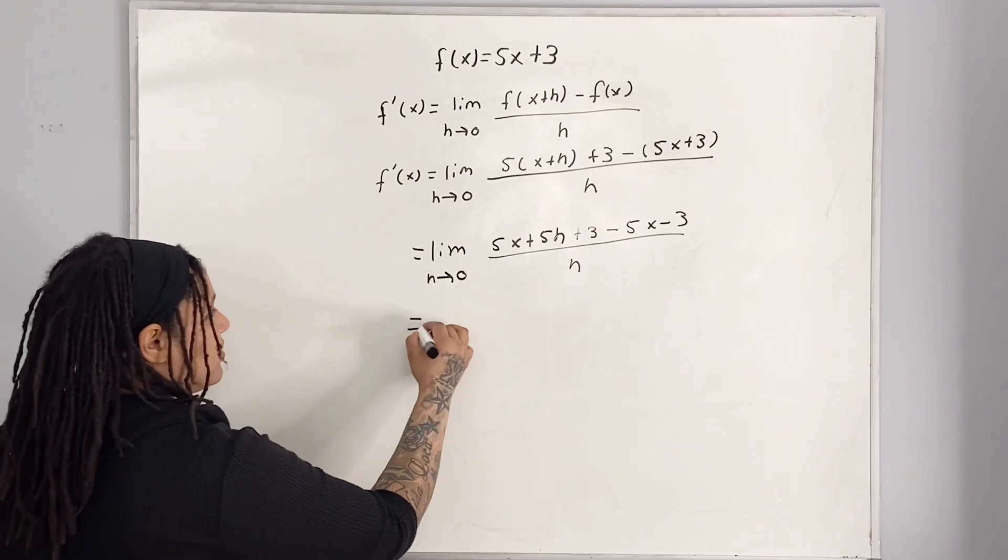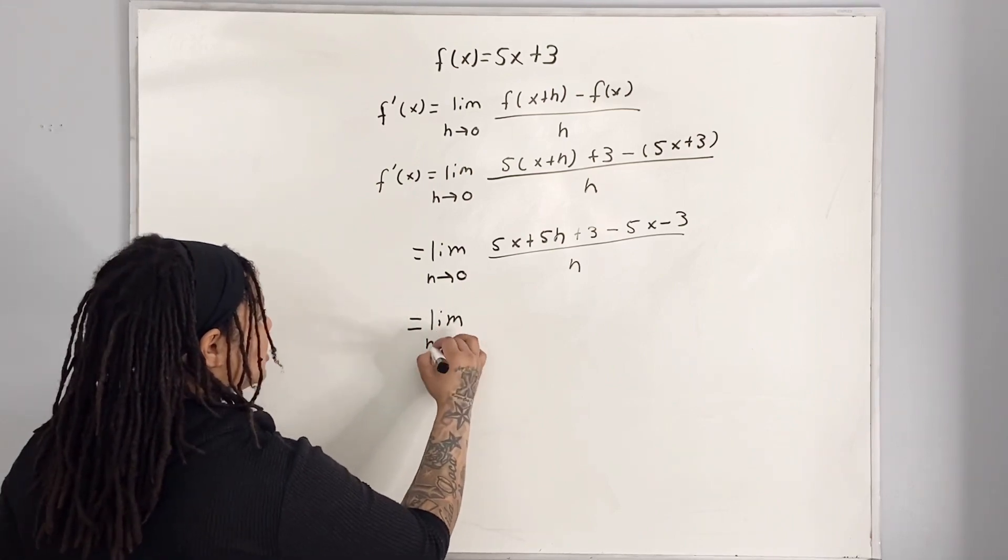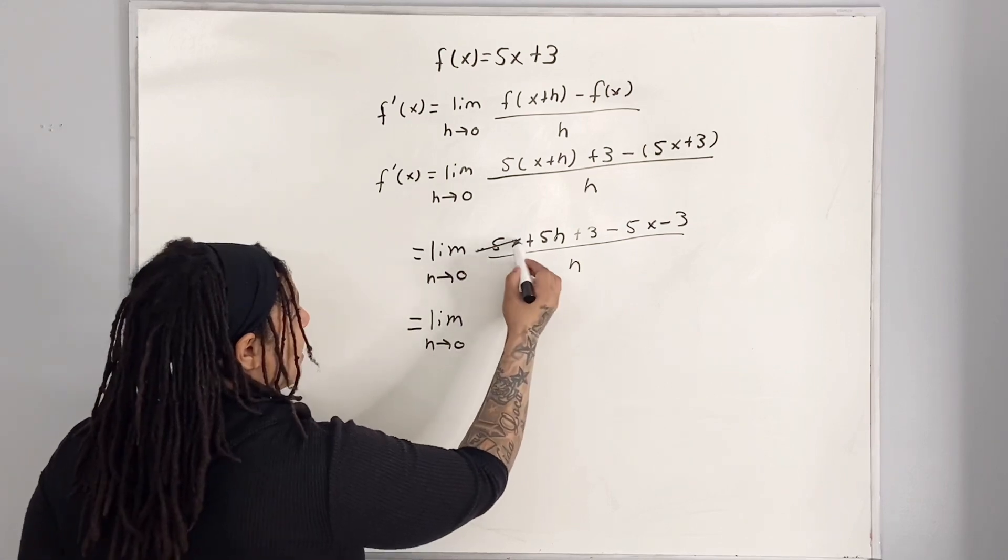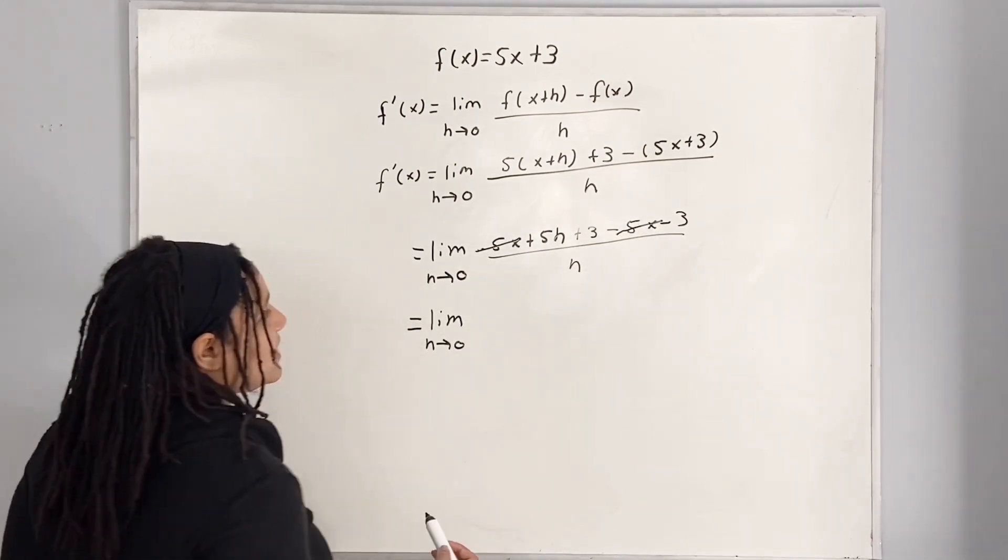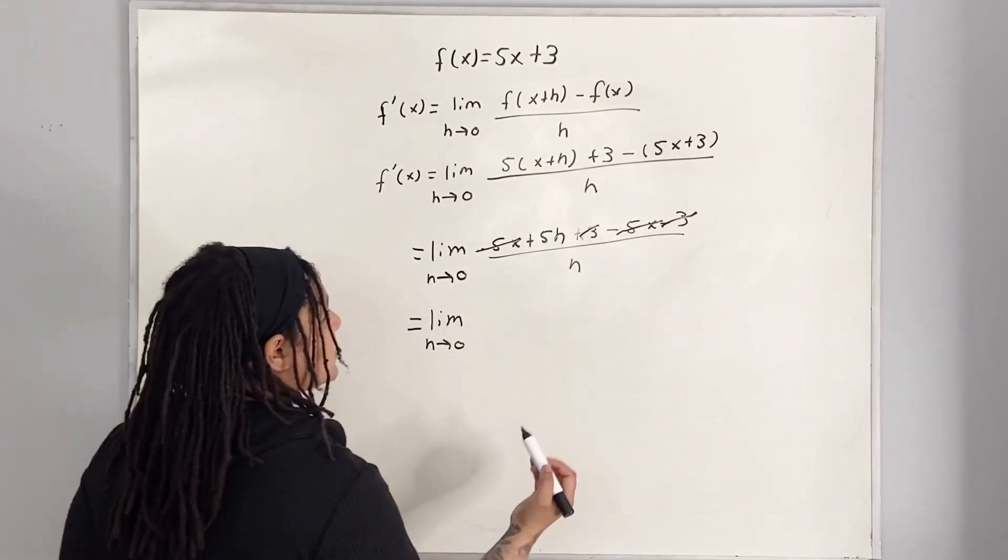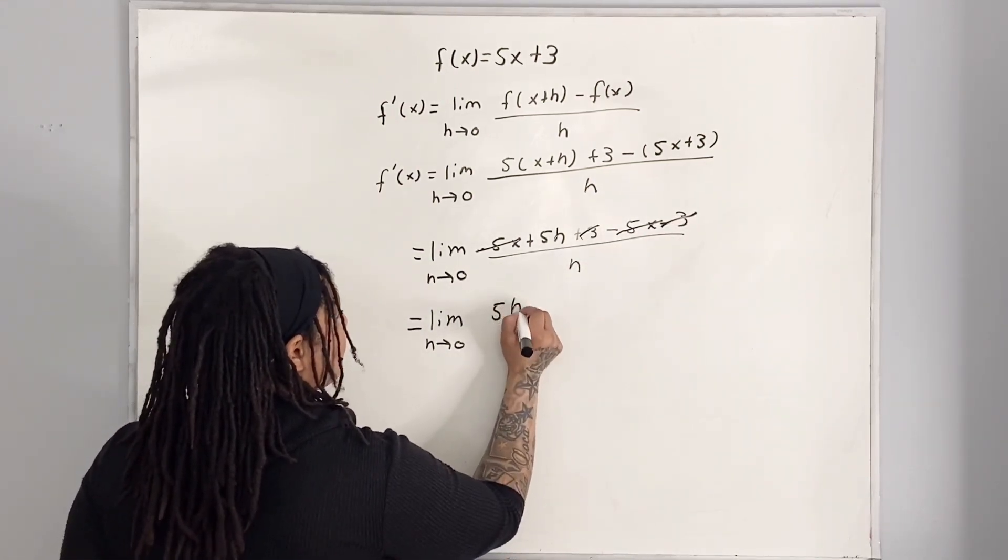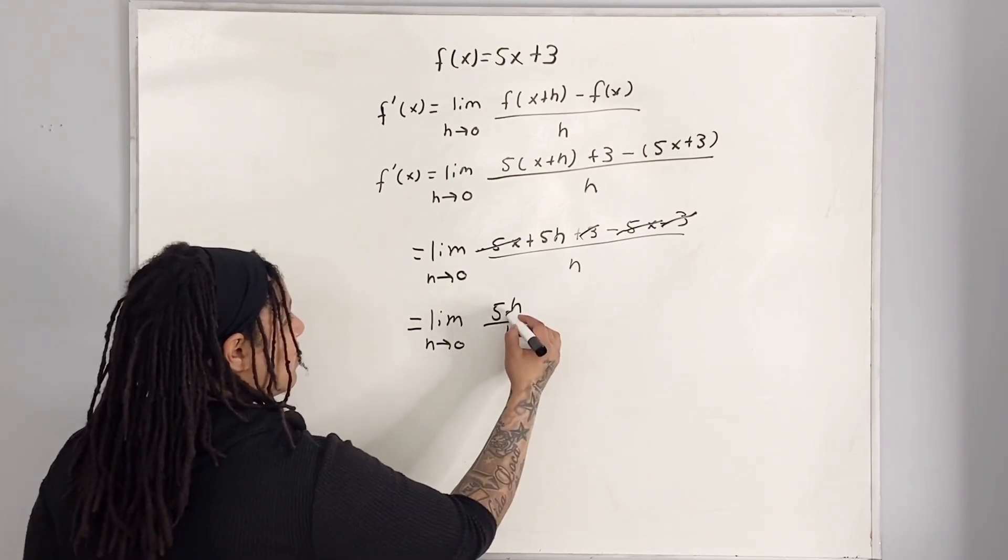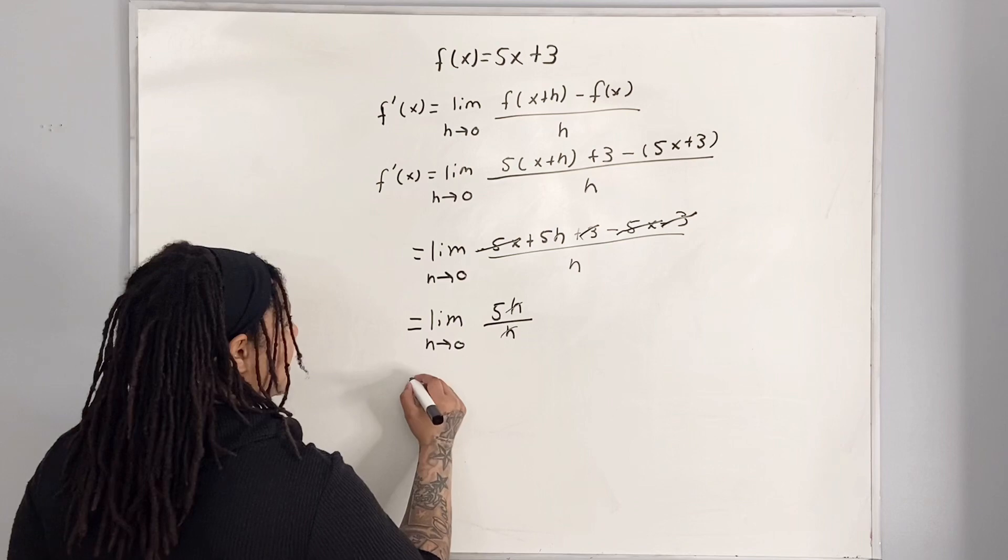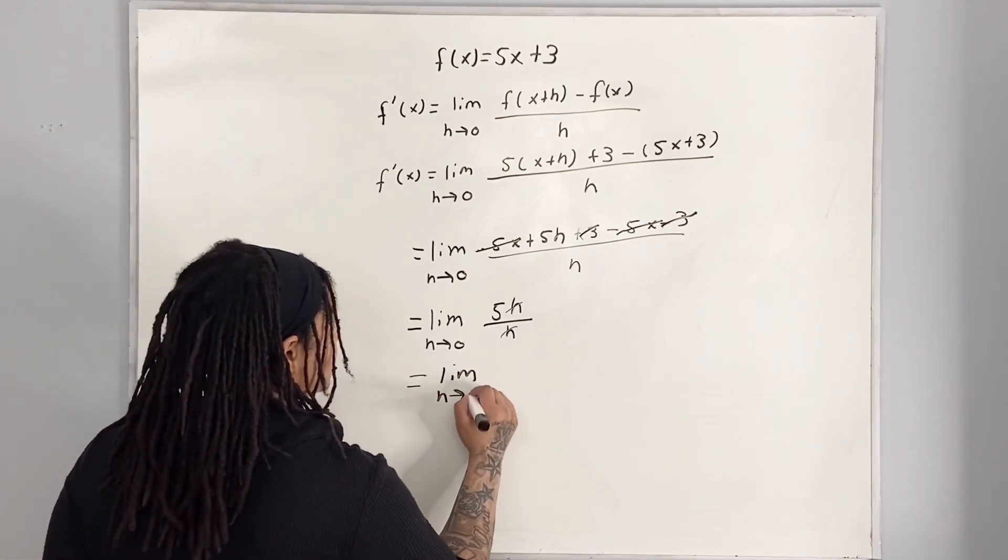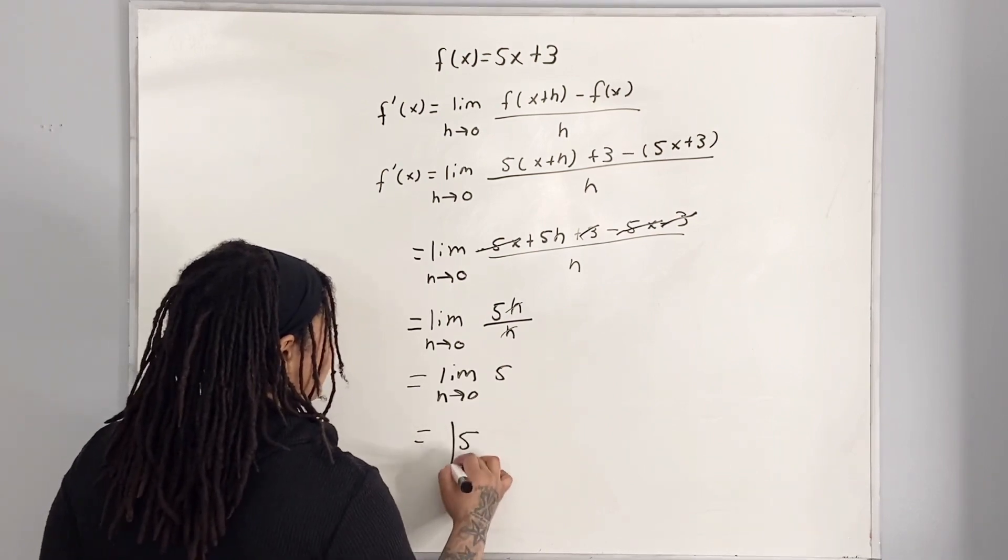Simplifying it further we have the limit as h approaches 0 of, so our 5x and our negative 5x cancels and 3 and negative 3 cancels, so we're left with 5h over h. And now we have that our h is canceled so we have that is equal to the limit as h approaches 0 of 5 which is equal to 5.